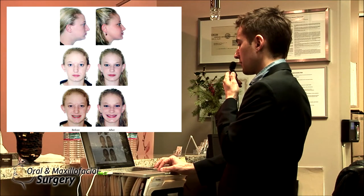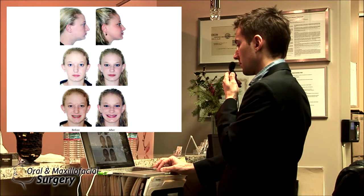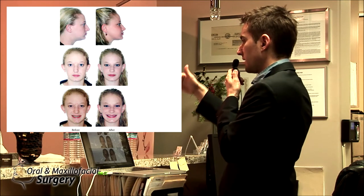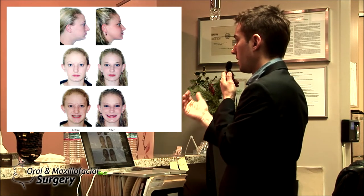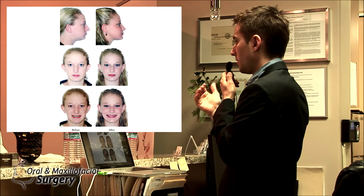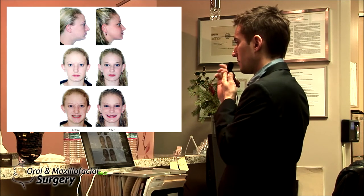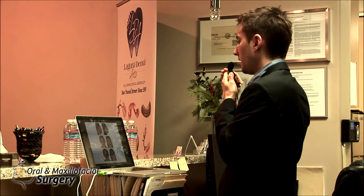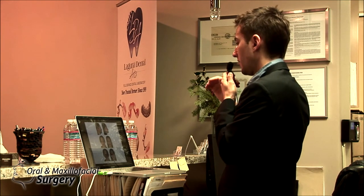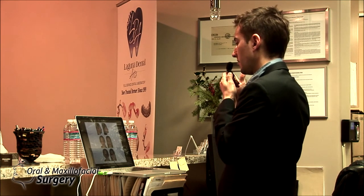We made her smile bigger by advancing the upper jaw down, so when she smiles she shows more teeth. When you smile on a female, you want to show three millimeters of teeth at rest when you relax and your mouth is a little bit open. Then in that smile, show full length of teeth and maybe one to two millimeters of gum ideally.